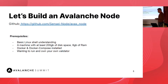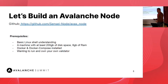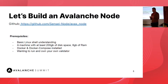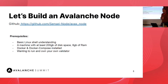For this workshop we will be on the Fuji testnet, so we only need 200 gigabytes of disk space and 8 gigabytes of RAM. If you're going to replicate the same steps on mainnet, you will need a lot more space. The blockchain is always growing as you incorporate more blocks and transactions, so I would recommend one terabyte for mainnet — that will last you quite a bit.